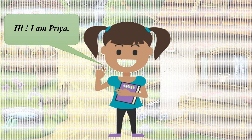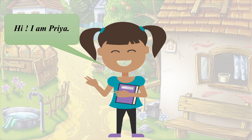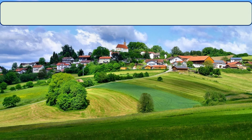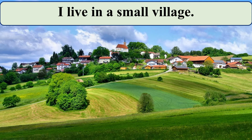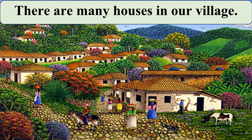Hi, I am Priya. Here is a small girl who says hi to you. Look at Priya, listen carefully, and repeat after me: Hi, I am Priya. Priya lives in a small village — she says: I live in a small village. There are many houses in our village. You can see in the picture so many village houses — look at their roofs. Say with me: There are many houses in our village.